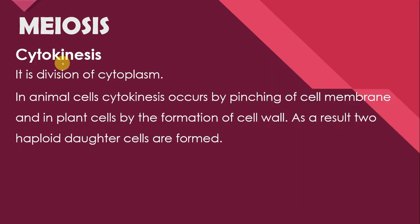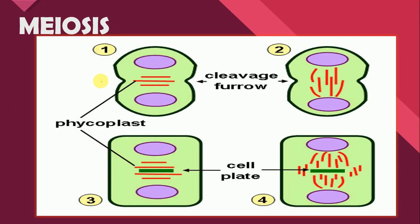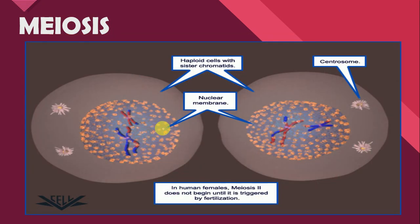Next is cytokinesis. After the division of nucleus there comes the division of cytoplasm. In animal cells, cytokinesis occurs by the pinching of the cell membrane, and in plant cells by the formation of a cell wall — as a result, two haploid daughter cells are formed. So as a result of cytokinesis, two haploid daughter cells are formed from the single diploid parent cell.